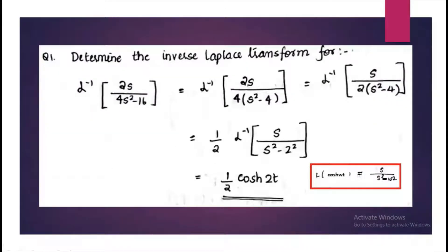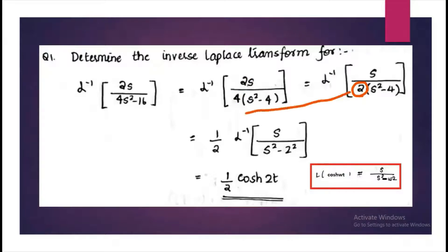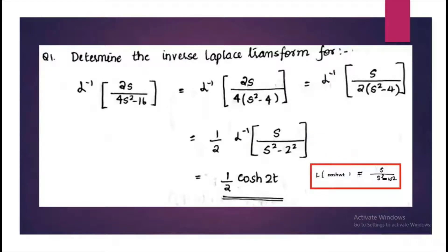Let's do problems based on this topic. First, we have to determine the inverse Laplace transform of 2S by 4S squared minus 16. The denominator contains the common term 4, so bring it outside — that can be cancelled with the 2 in the numerator, giving a constant 1 by 2 outside the bracket. This term is then in the format S by S squared minus omega squared, so the inverse is cosh(omega t), giving cosh(2t).